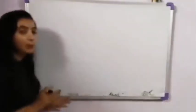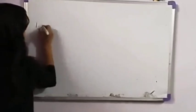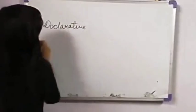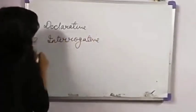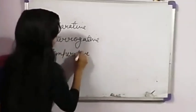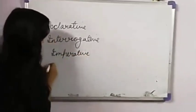So students, we have learnt in our previous video types of sentences. Ham ne hamare previous video mein sentence ke kuch types padhe. Starting our today's class, let's have a recap of our previous video. So in our previous video, we learnt about four types of sentences. These are: declarative, second is interrogative, third is imperative, and fourth is exclamatory.